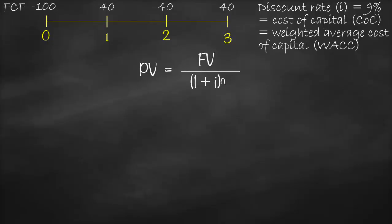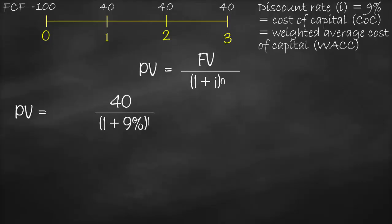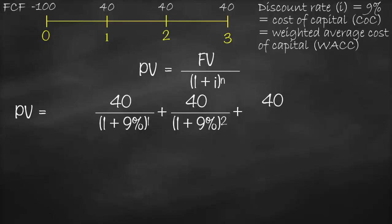The present value of a single cash flow formula is: present value equals future value divided by (1 + i) to the power n. I have three cash flows — at year one, two, and three — so I apply this formula three times. Present value equals 40 divided by (1 + 9%) to the power one, plus 40 divided by (1 + 9%) to the power two.